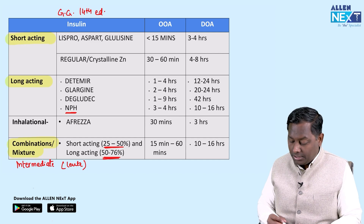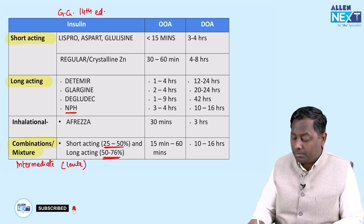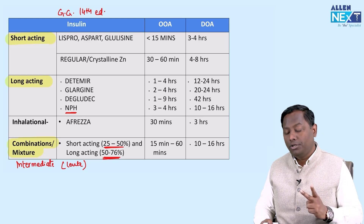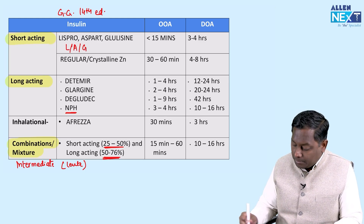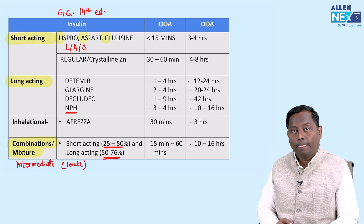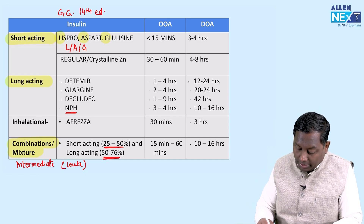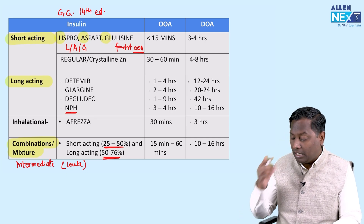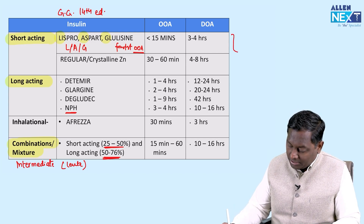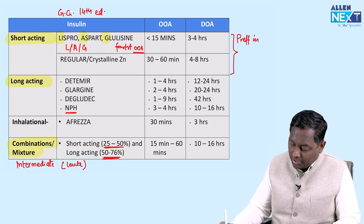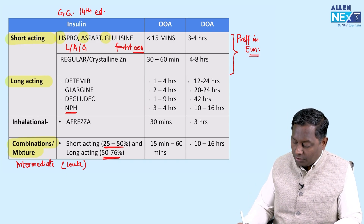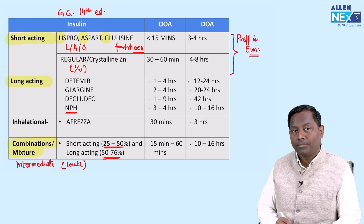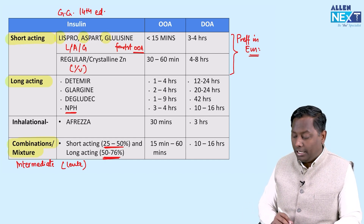In this table from Goodman-Gilman 14th edition, regular insulin has also been classified under shorter acting. Previously, Lispro and Aspart were called ultra-short acting, but now just short acting. For shorter acting, remember the mnemonic LAG: Lispro, Aspart, Glulicine — these are also the fastest acting, with onset of action within 15 minutes and lasting around three to four hours. These are preferred in emergency situations like diabetic ketoacidosis. Regular insulin is the IV-available form, with onset of action around 30 to 60 minutes and duration of four to eight hours.